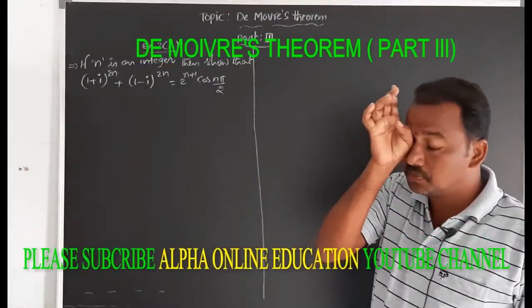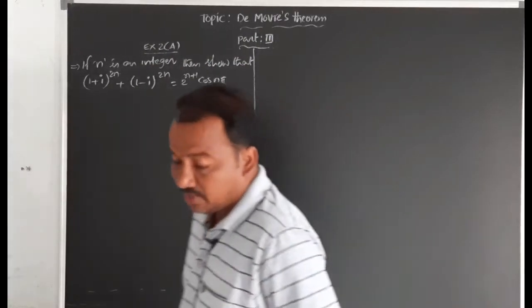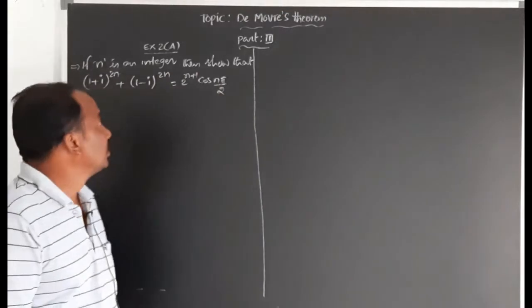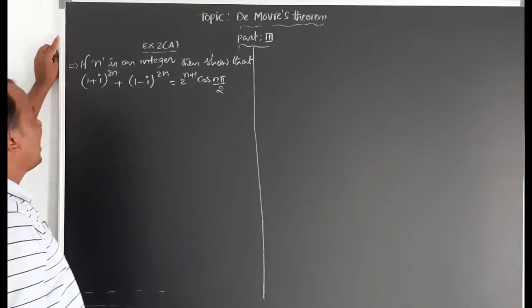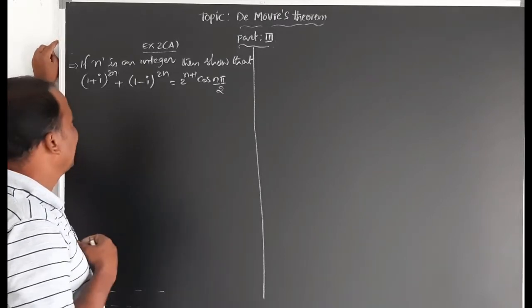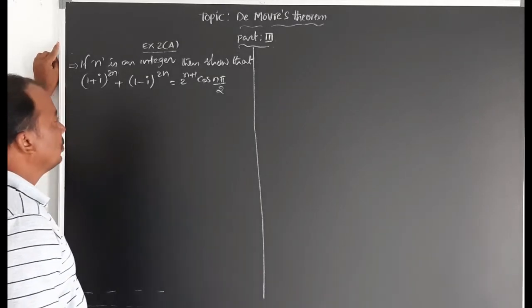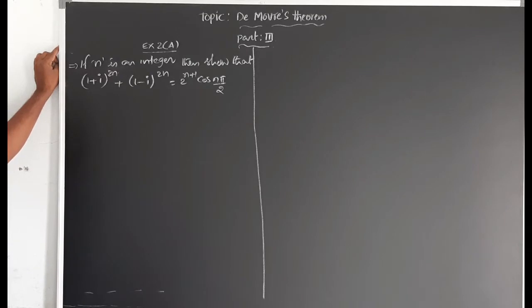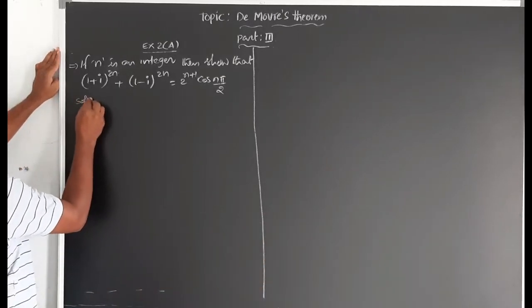De Moivre's theorem — some concepts. Today we solve some problems, the most important problem worth 7 marks. If n is an integer, show that (1+i)^2n + (1-i)^2n equals 2^(n+1) · cos(nπ/2). So let's solve this one.